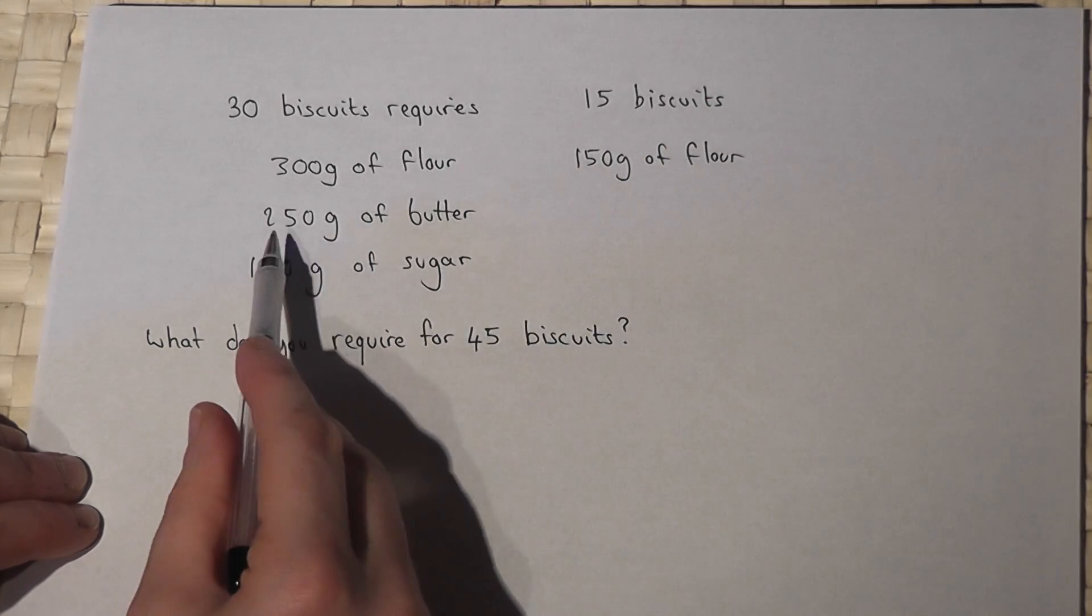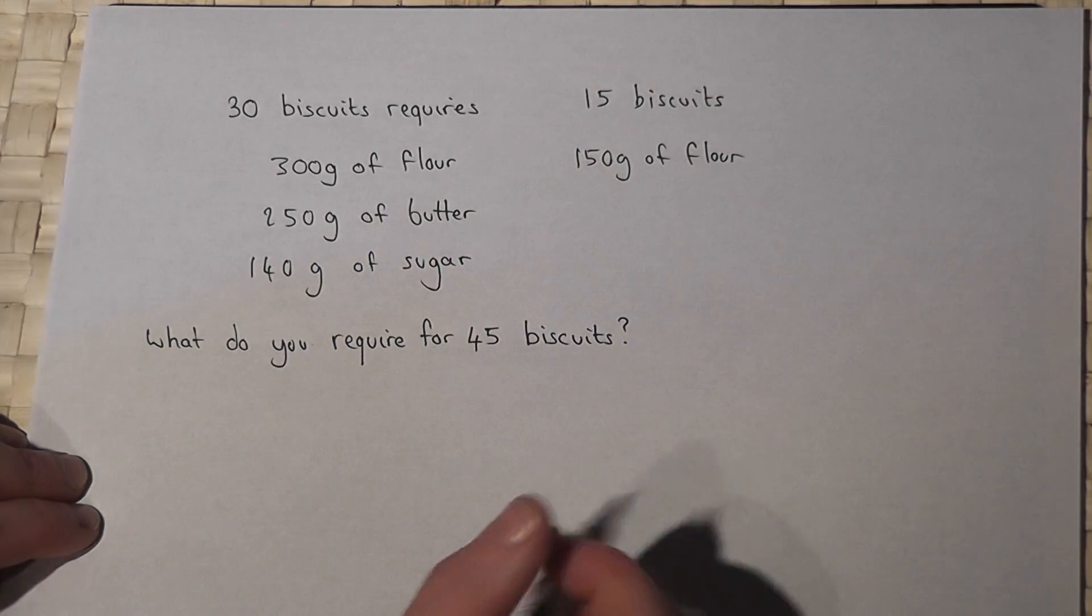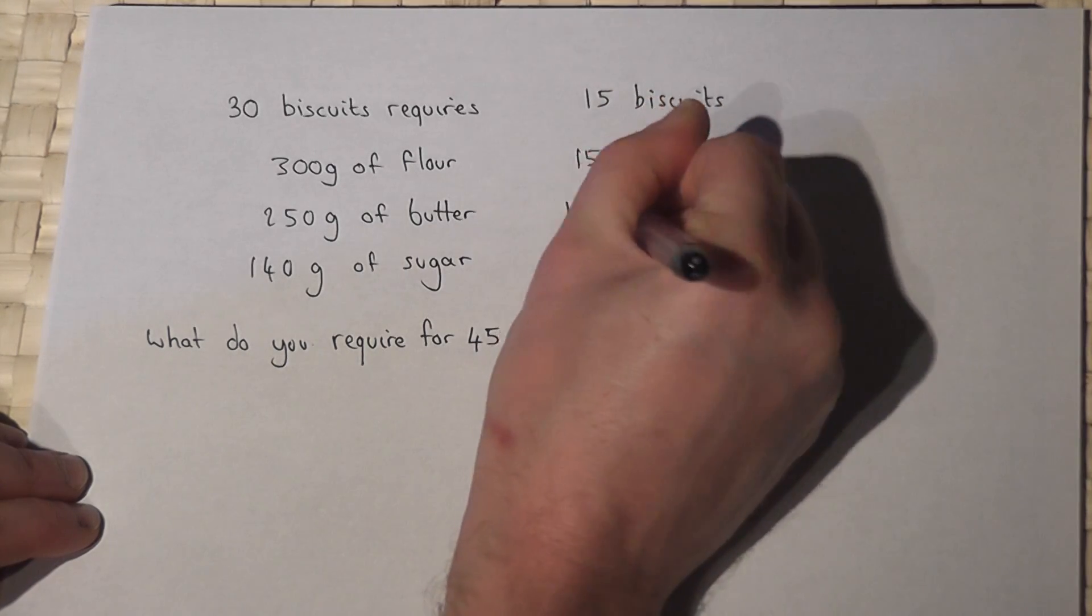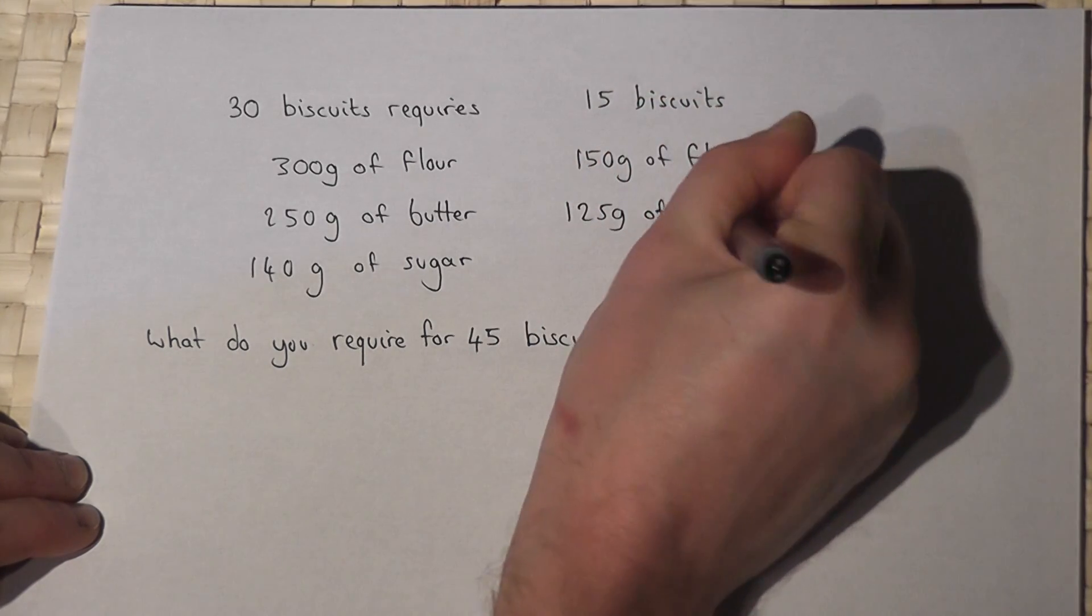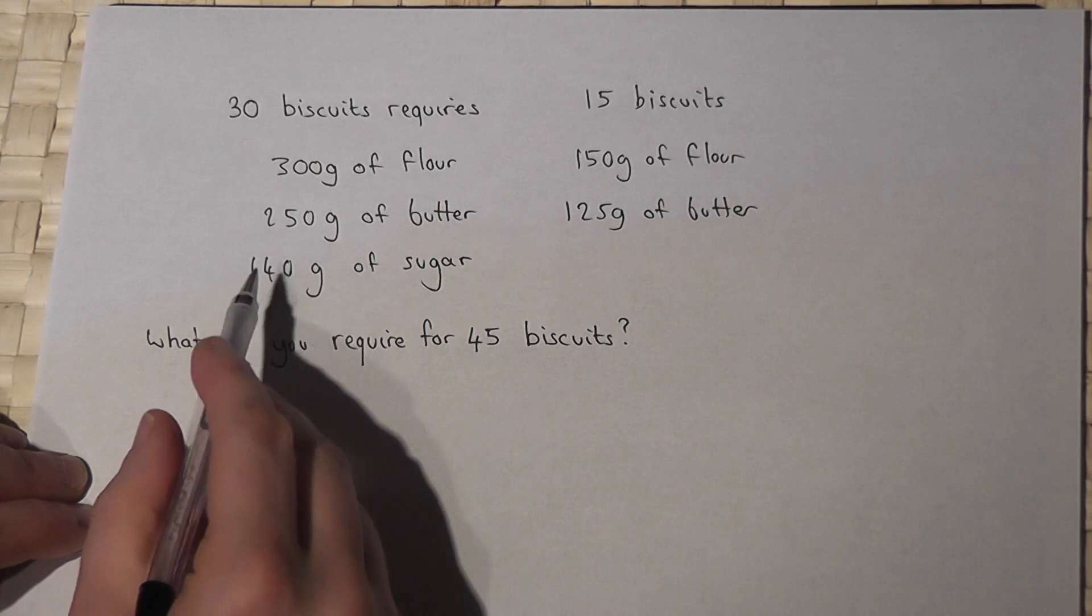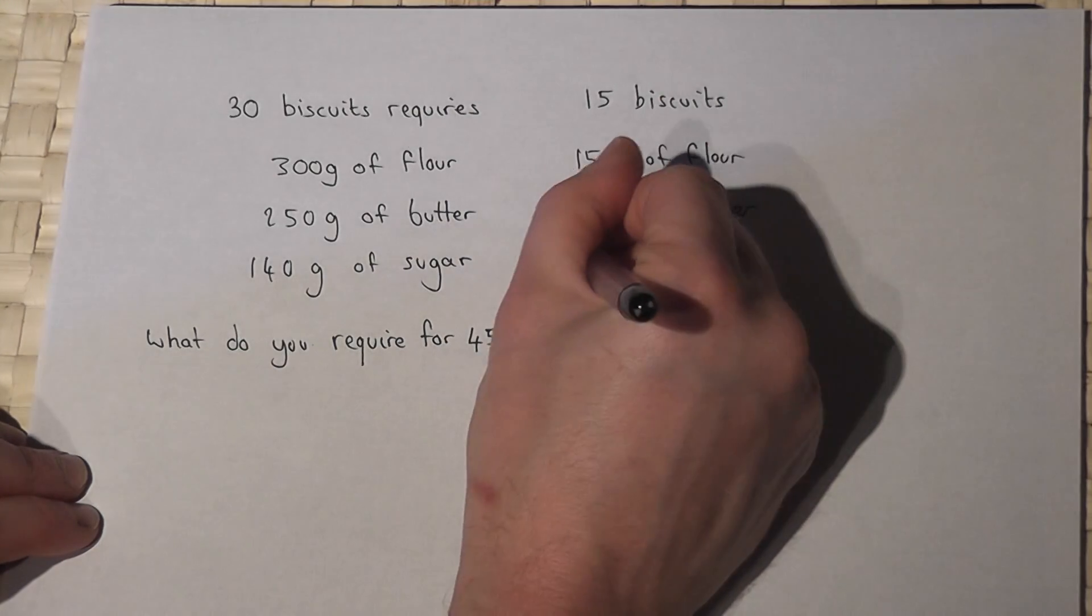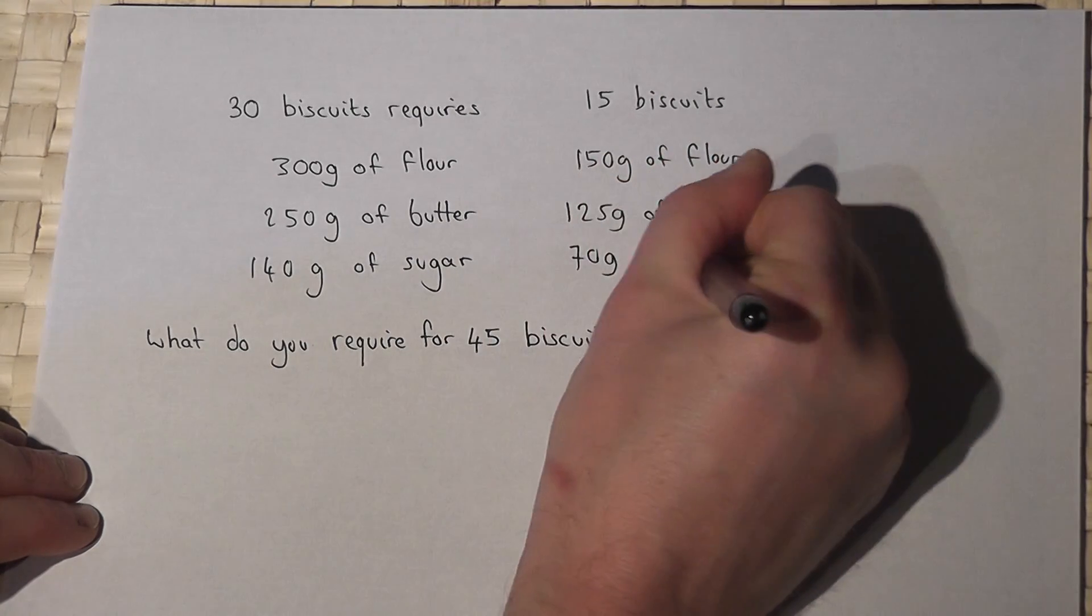We will require half of 250 grams of butter, which is 125 grams of butter, and half of 140 grams of sugar is 70 grams of sugar.